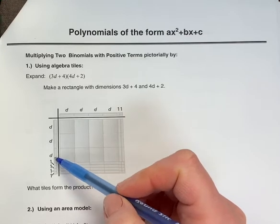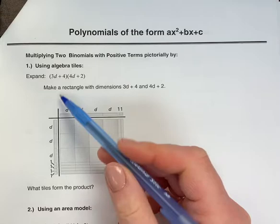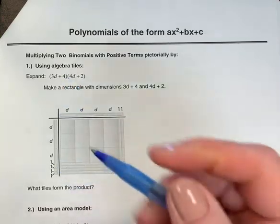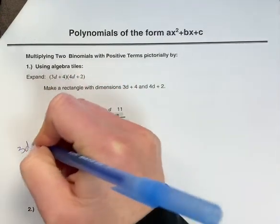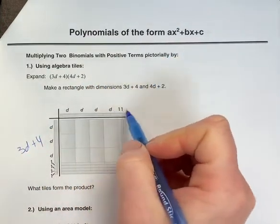Remember, one of these long sticks is a d tile, and then it has 4, so we need 4 little 1 tiles. So on this side is the 3d plus 4. Along the top here, you have 4ds plus 2.